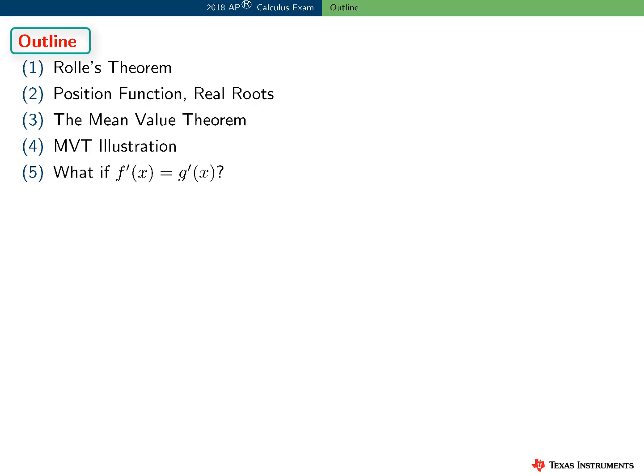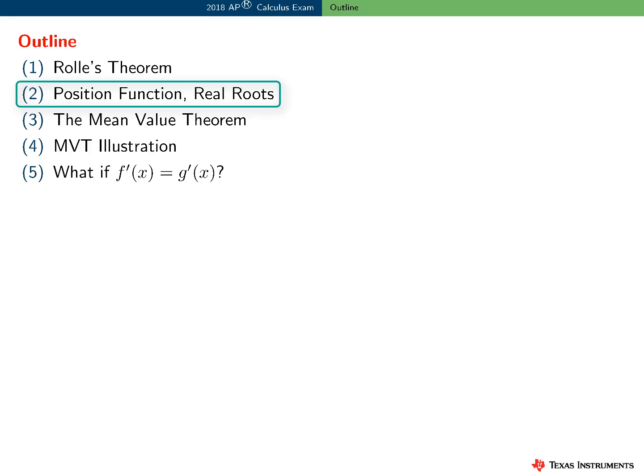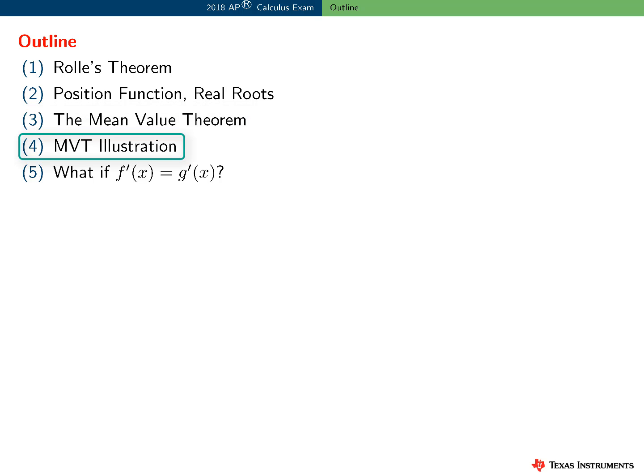Here's an outline of the information presented in this video. I'll begin by discussing a preliminary result, Rolle's theorem, and I'll consider some applications of Rolle's theorem, specifically to particle motion and determining real roots of a function. Then I'll present the mean value theorem, illustrate this theorem, and show that this result is very reasonable. Finally, I'll suggest a few theorems that are proved using the mean value theorem.